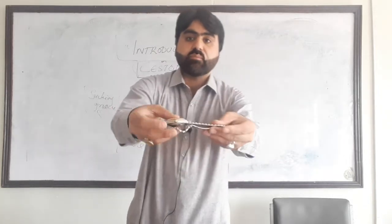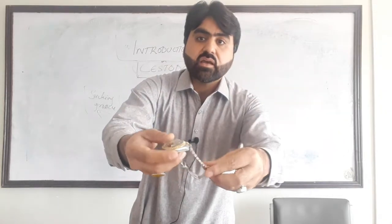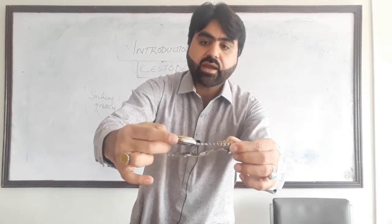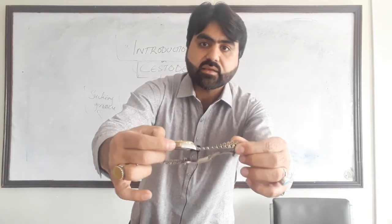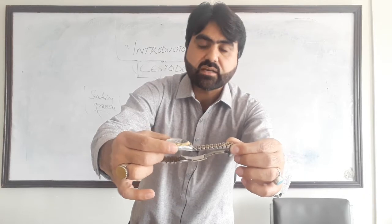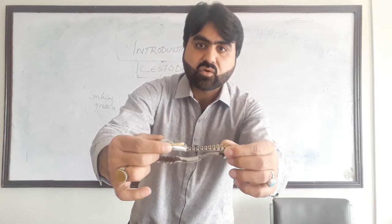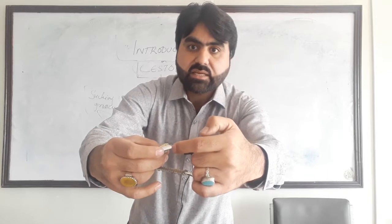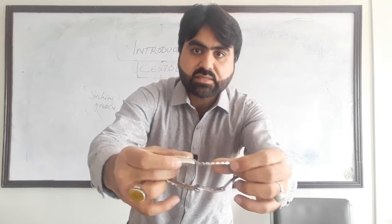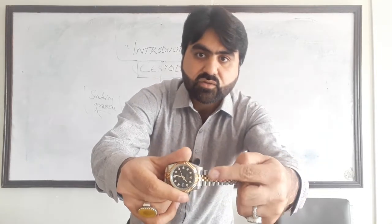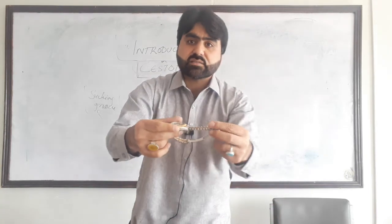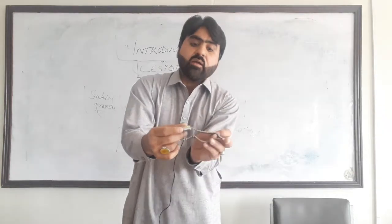The shape of the cestode worm is like a wristwatch. Consider this to be the scolex or head, with the sucking grooves or sucking ducts present at the scolex. These are the different segments of the body — like the links of a chain — and each segment is hermaphrodite.